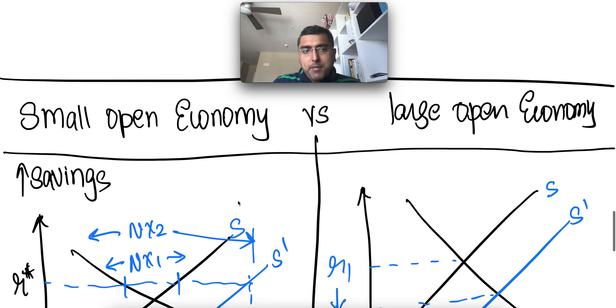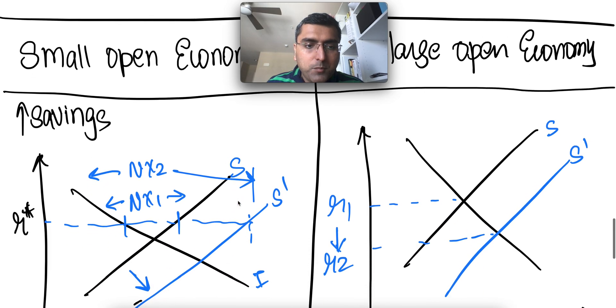So now let's compare and contrast small versus large open economies. Small economies, we see that the R star, the equilibrium is not changed. We saw these two curves, where interest rate falls when savings goes up.